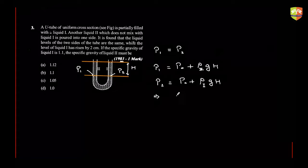Both p1 and p2 are equal because they are along the same horizontal line. Since p1 equals p2, this implies the density of the first liquid has to equal the density of the second liquid. So if the specific gravity of the first one is 1.1, for the second one it also has to be 1.1. That is how you solve this question.